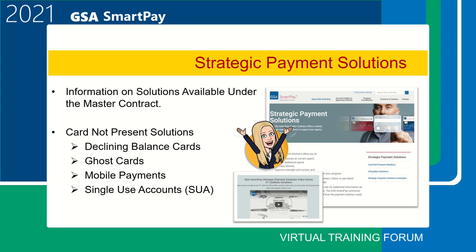Strategic Payment Solutions will allow you to gain efficiencies on current spend, capture additional spend, increase refunds, improve oversight and control, and gain transparency and accountability. Card Not Present solutions include declining balance cards, ghost cards, mobile payments, and single-use accounts. There are five new videos that help explain Strategic Payment Solutions, including Card Not Present Solutions, the GSA SmartPay Tax Advantage Travel Card Account, ePayables, Contactless Payment Solutions, and Virtual Travel Cards. Links to these videos are located throughout the website and on the online training website.